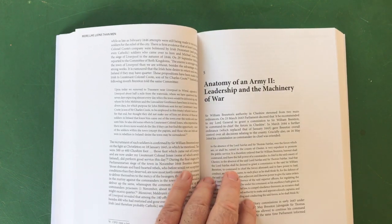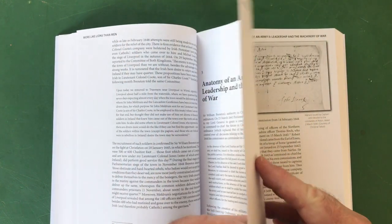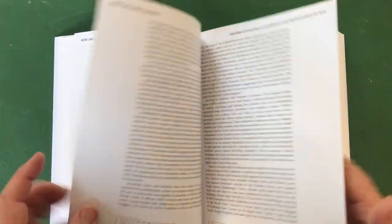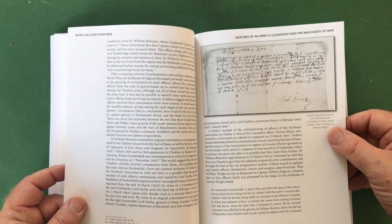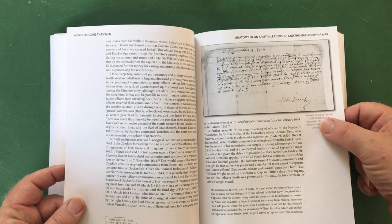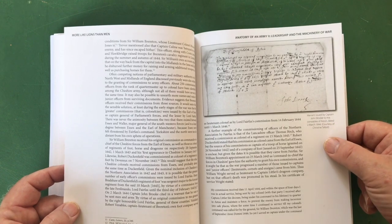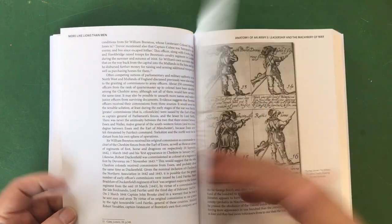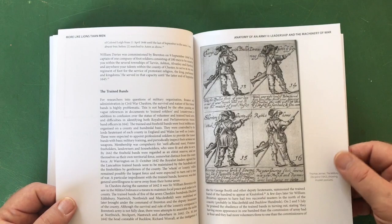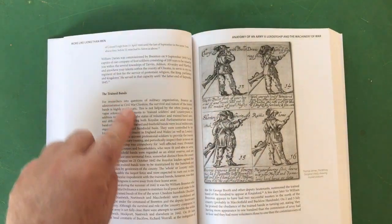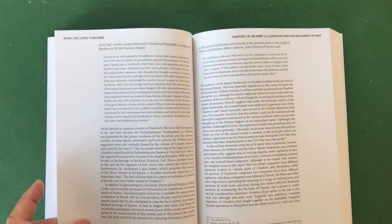Then we go on to Anatomy of an Army Two: Leadership and the Machinery of War. So here we are talking about the commanders, how the chain of command works, the officers. Here we go: a warrant issued by Captain John Brooke to the constables of Aston dated 2nd of March 1644.